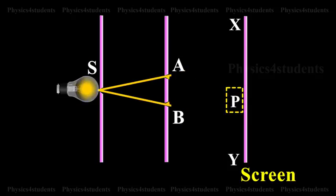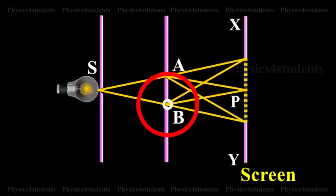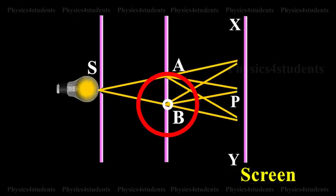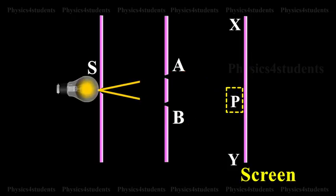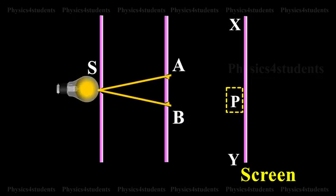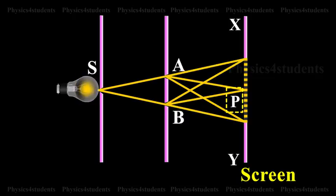At P on the screen, waves from A and B travel equal distances and arrive in phase. These two waves constructively interfere and bright fringes are observed at P. This is called central bright fringe.